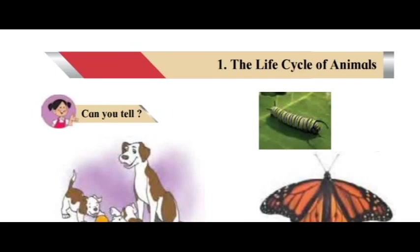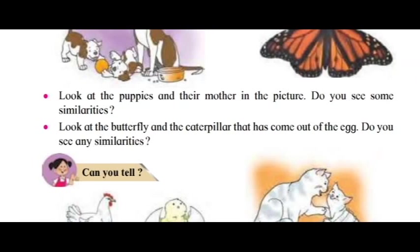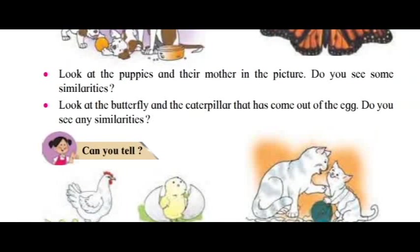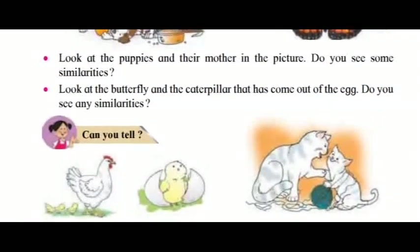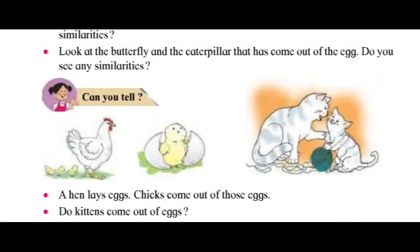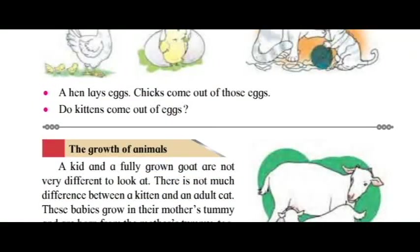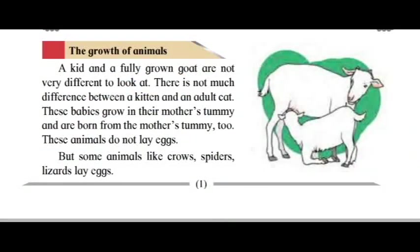The life cycle of animals. Look at the puppies and their mother in the picture — do you see some similarities? Look at the butterfly and the caterpillar that has come out of the egg — do you see any similarities? Can you tell? A hen lays eggs and chicks come out of those eggs. Do kittens come out of eggs? A kid and a fully grown goat are not very different to look at.